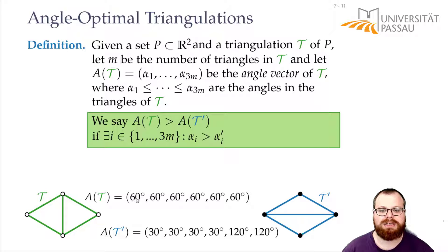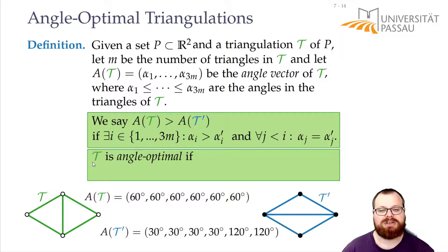The smallest angle here is 60 degrees, the smallest angle here is 30 degrees. That means that this is a better triangulation for us. And then the best triangulation is the angle optimal triangulation. And angle optimal we define such that there is no other triangulation that is better.